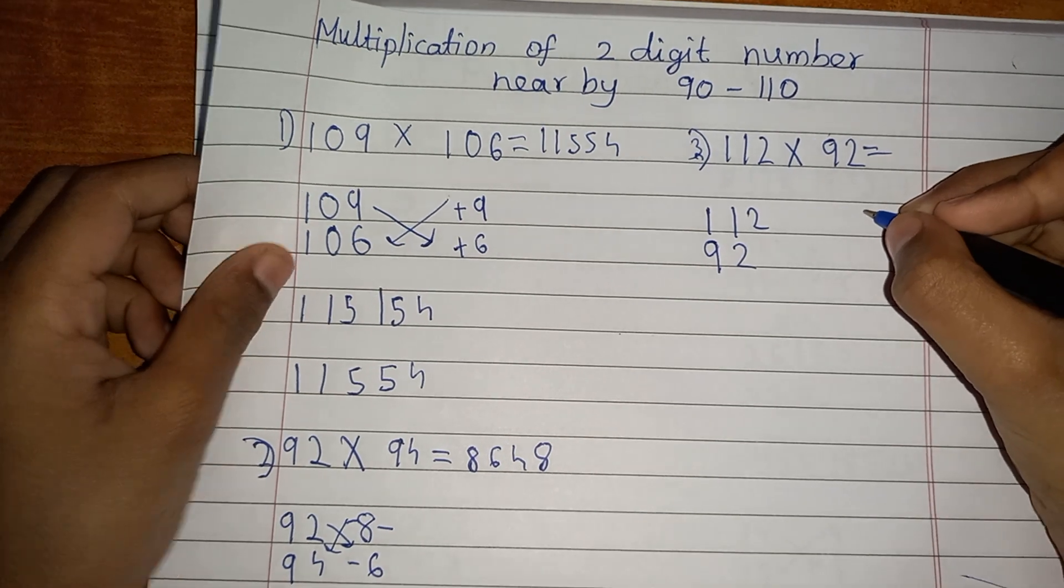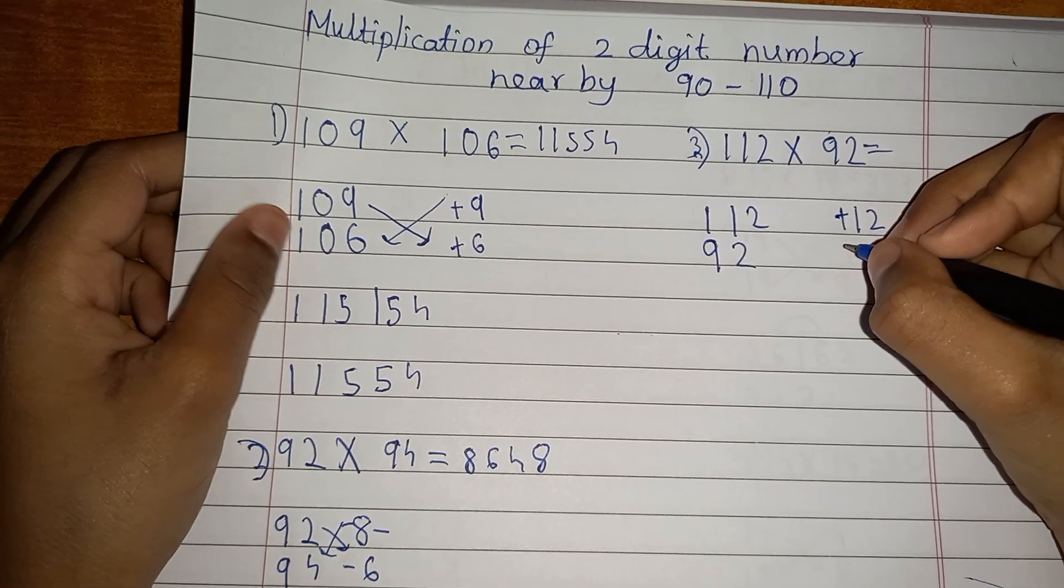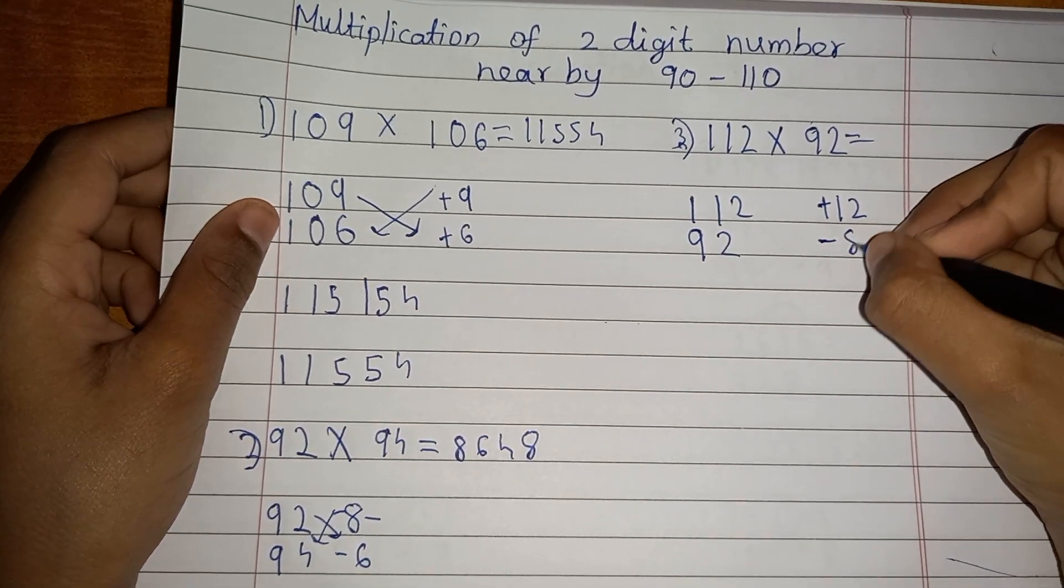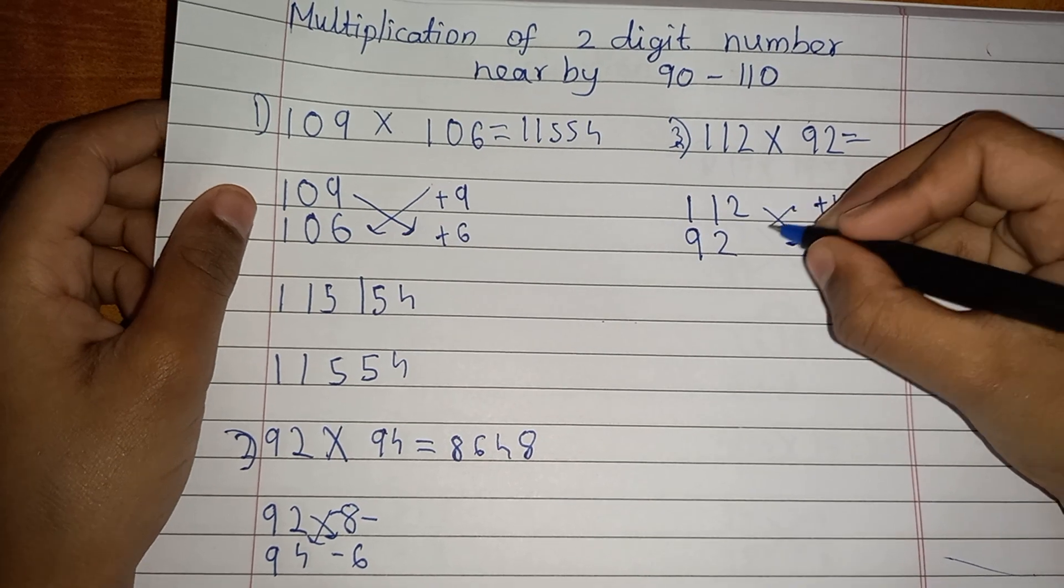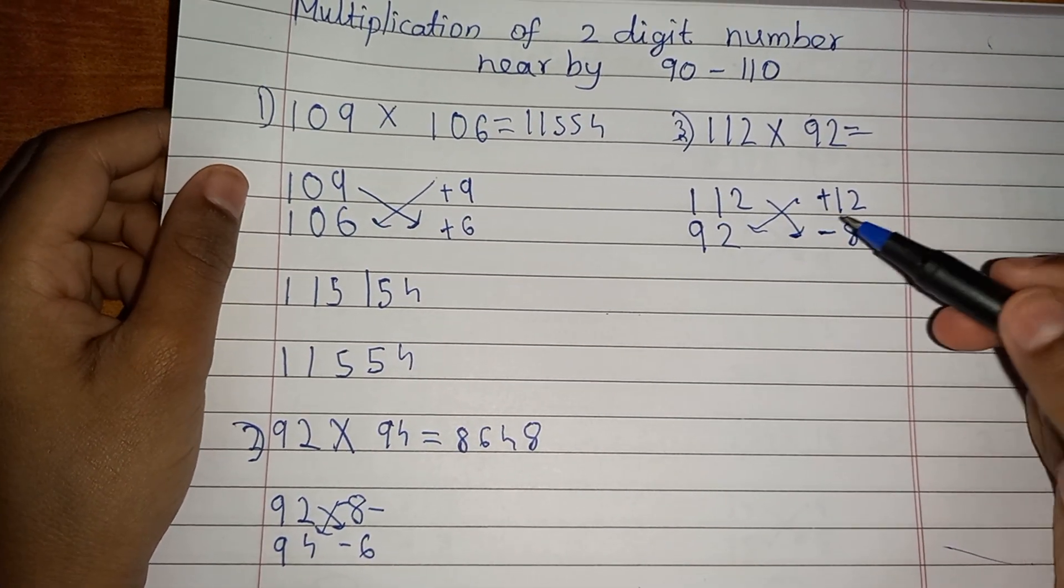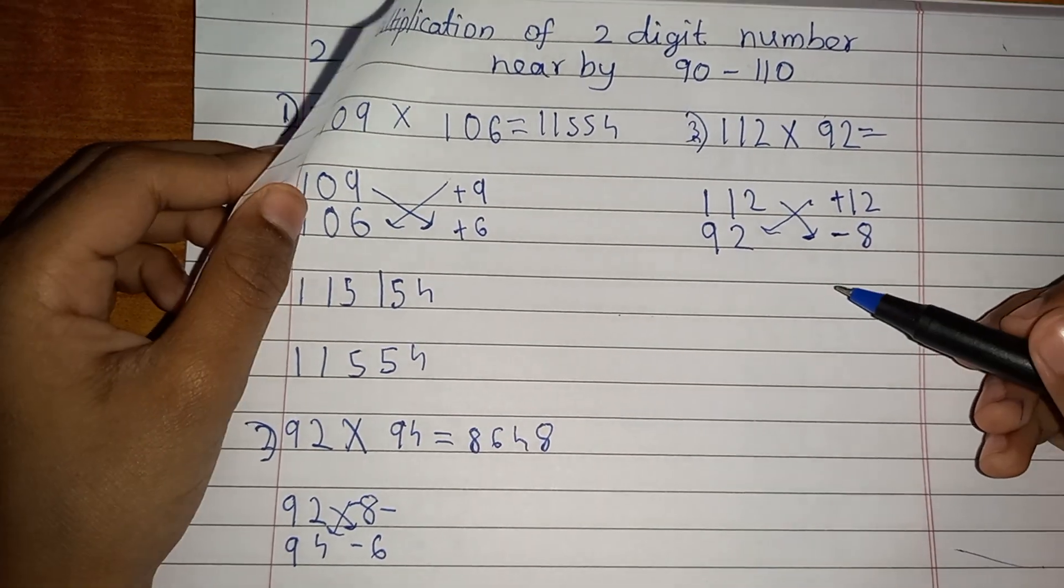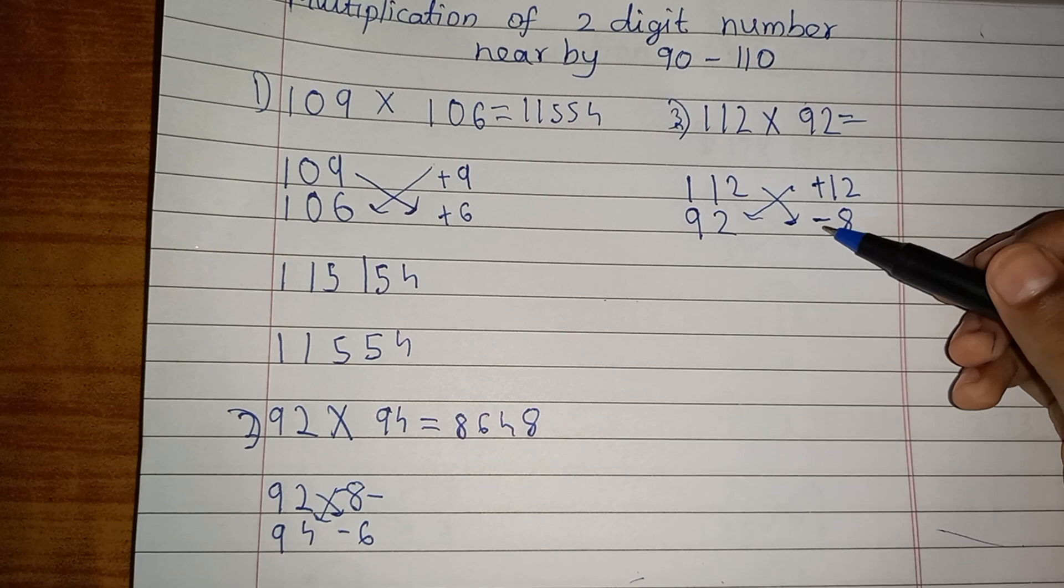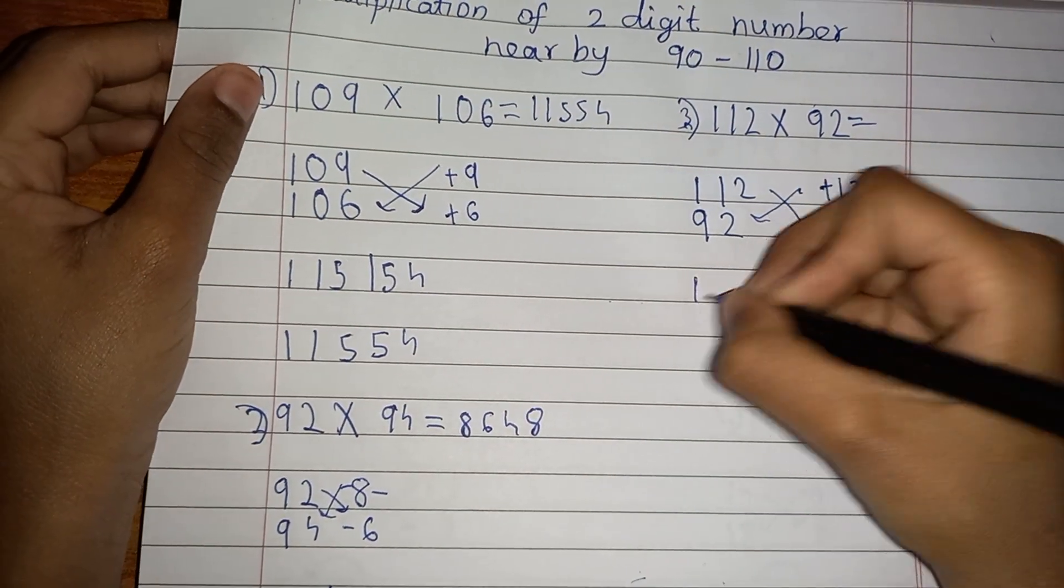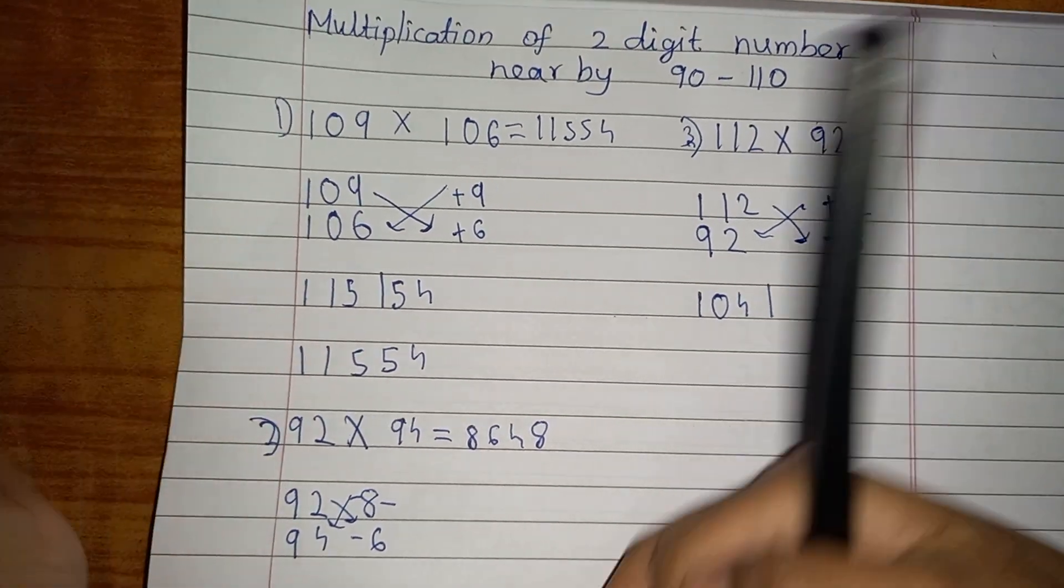112, then 92. This is plus 12 and this is minus 8. Now you have to do like 92 plus 12, or 112 minus 8. You'll get the same answer, which is going to be 104. So you have to write 104 here. Keep a line, then you have to do...